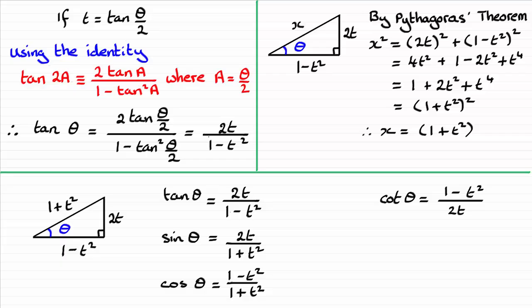And if we look at cosec theta, that's the reciprocal of sine theta. So we just invert the fraction and we've got cosec theta is 1 plus t squared over 2t.